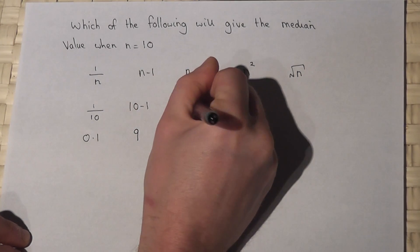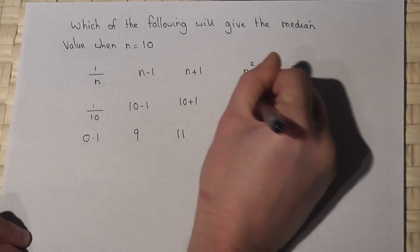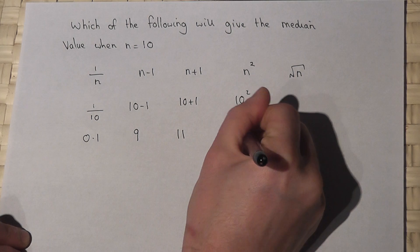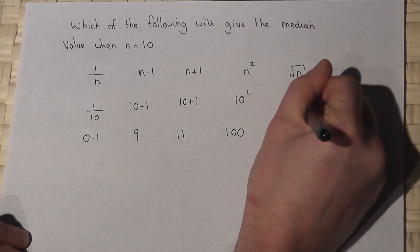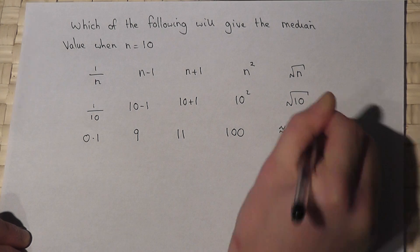10 plus 1, that is 11. 10 squared is 100. And root of 10, well that's approximately 3.3, very roughly.